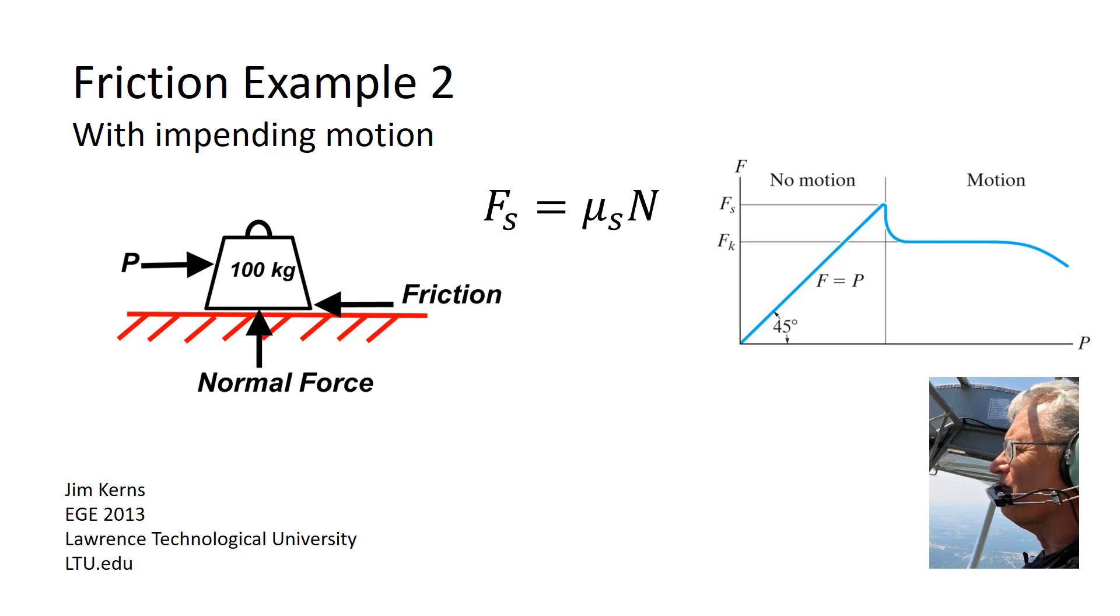For now, we're going to stick to friction with an example involving impending motion. Again, impending motion is something we use in our problem description where we will say, what is the maximum force on an object before it moves? What's the maximum angle? These are kinds of ways to imply that we're looking for equilibrium where the force from friction is equal to the maximum force available from friction.